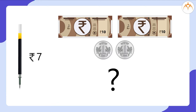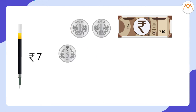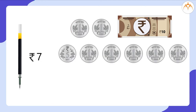What would I have done? With the shopkeeper, I exchanged one note of 10 rupees for one coin of 5 rupees and 5 coins of 1 rupee each. So now I have 2 plus 5 equals 7 coins of 1 rupee each.